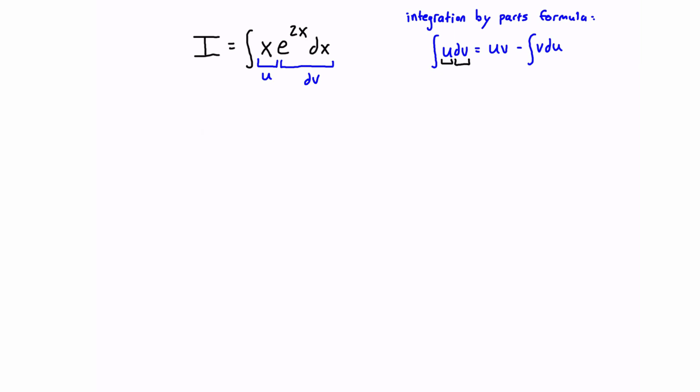So we already have one half of this expression, and then we just need to derive u to get du, and we need to integrate dv to get v, and then we're going to have everything we need. So let's get started, and we're going to work through the problem, and you're going to see that this is actually pretty straightforward.